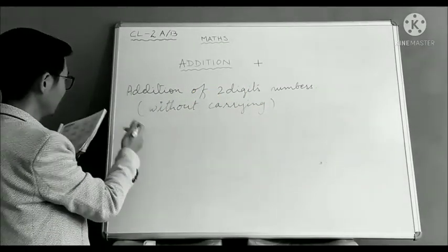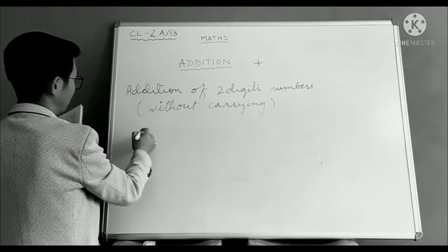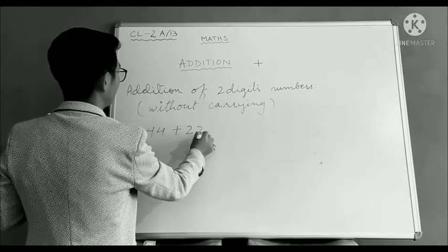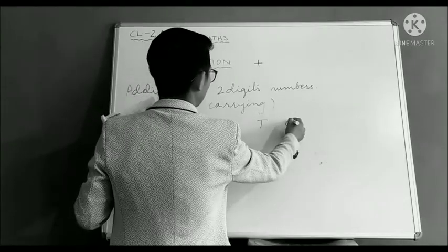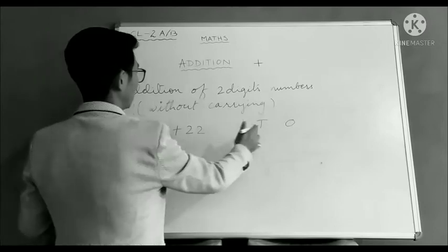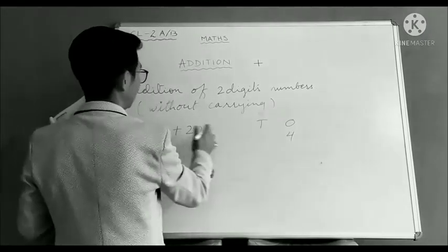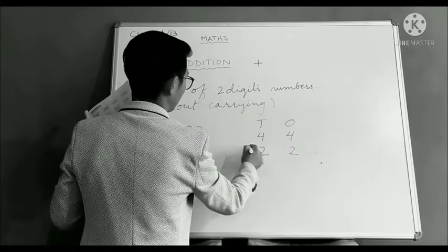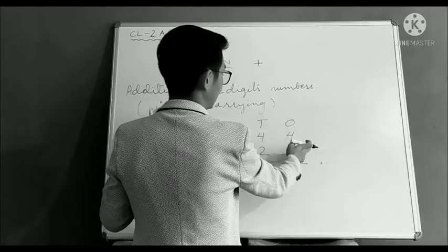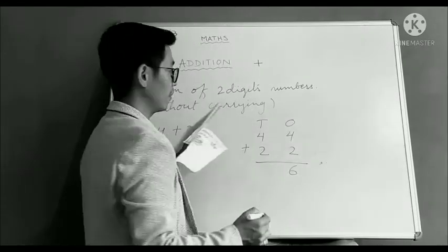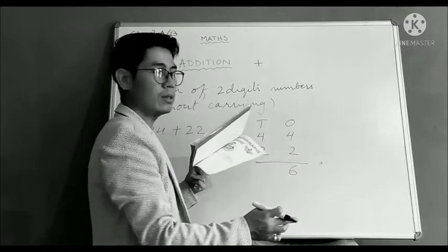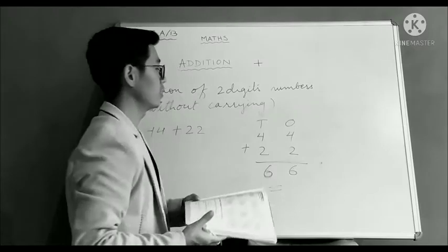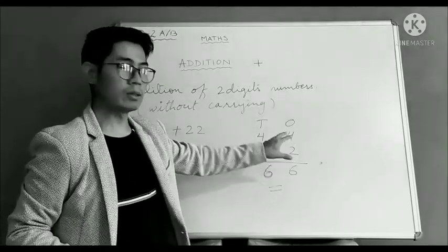Without carrying is very simple. Let's add two digits number, 44 plus 22. Just place them in ones and tens. 4 in ones, another 4 is in tens, and 2 is in ones, 2 in tens, plus sign. This is easy. 4 plus 2 is 6. Because we have got in ones place single digits. And tens, 4 plus 2 is 6. This is simple, without carrying numbers.